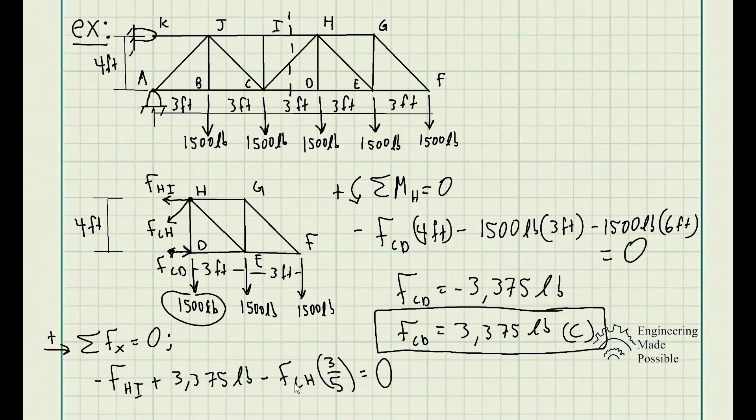And since we have the dimensions, which essentially is the rise, run, we have the hypotenuse. We essentially just use the ratio 3 over 5. The cosine adjacent over hypotenuse is equal to zero. So we still don't know F_CH and we don't know F_HI. That's exactly what we're trying to solve for.